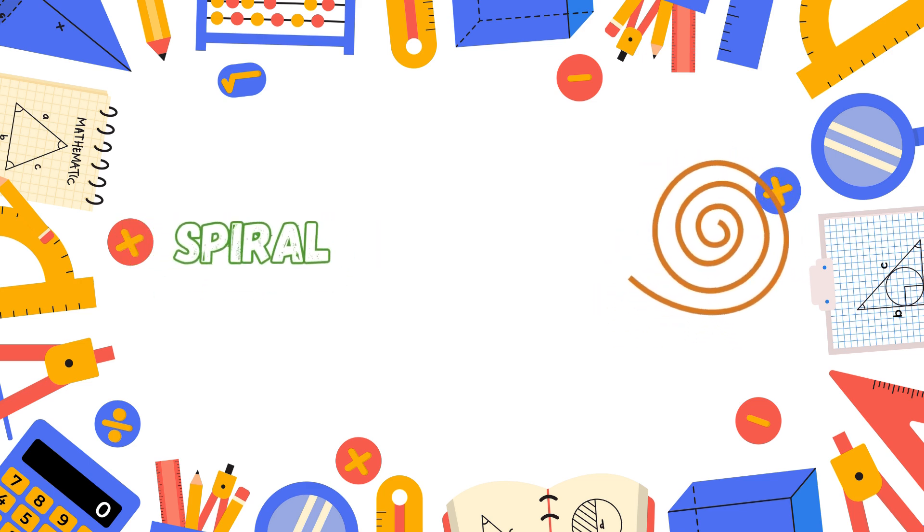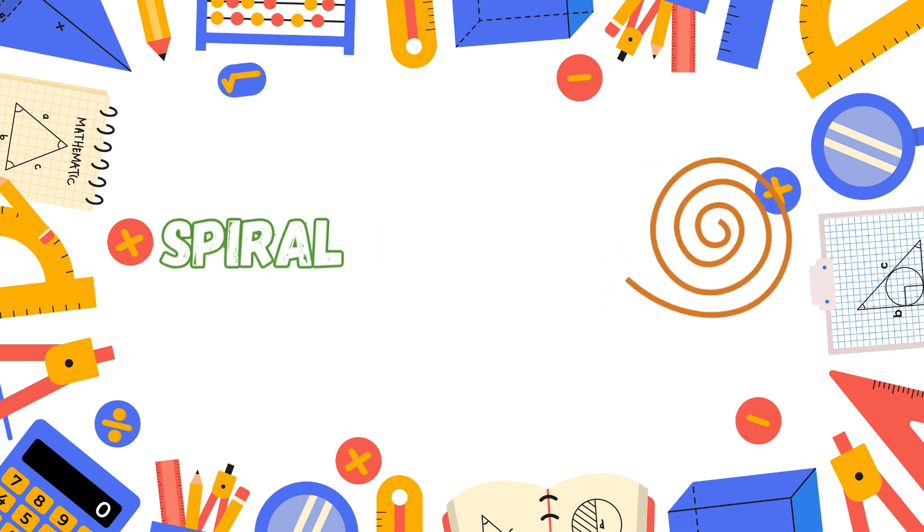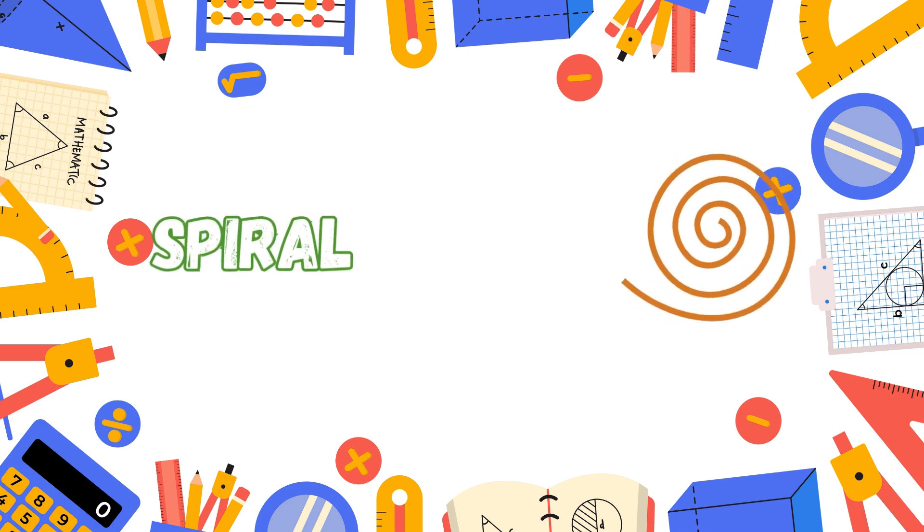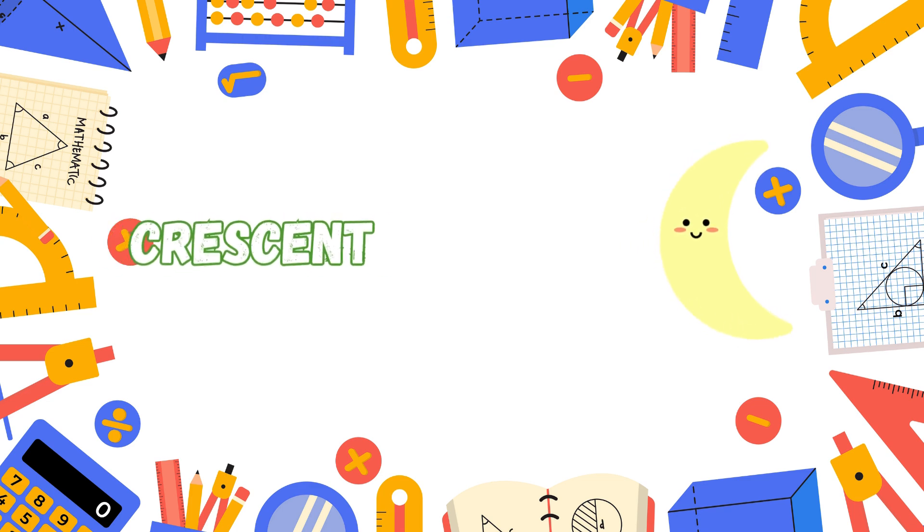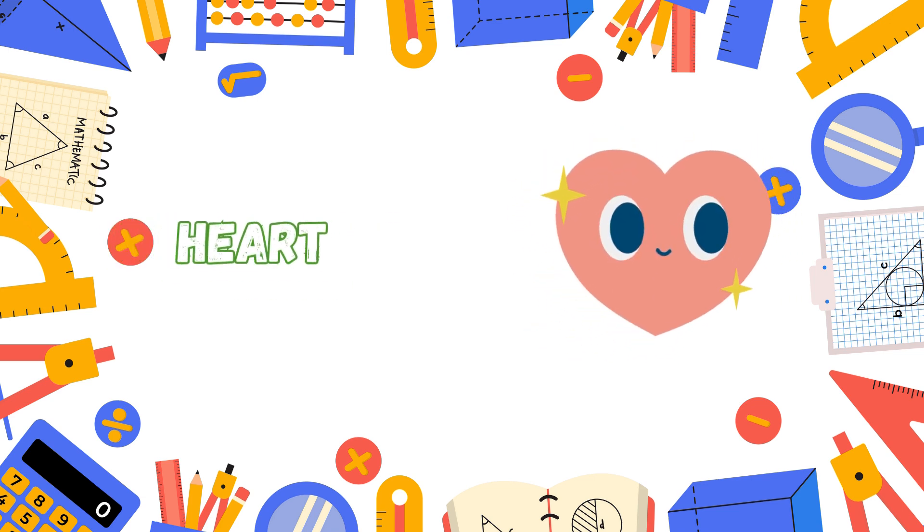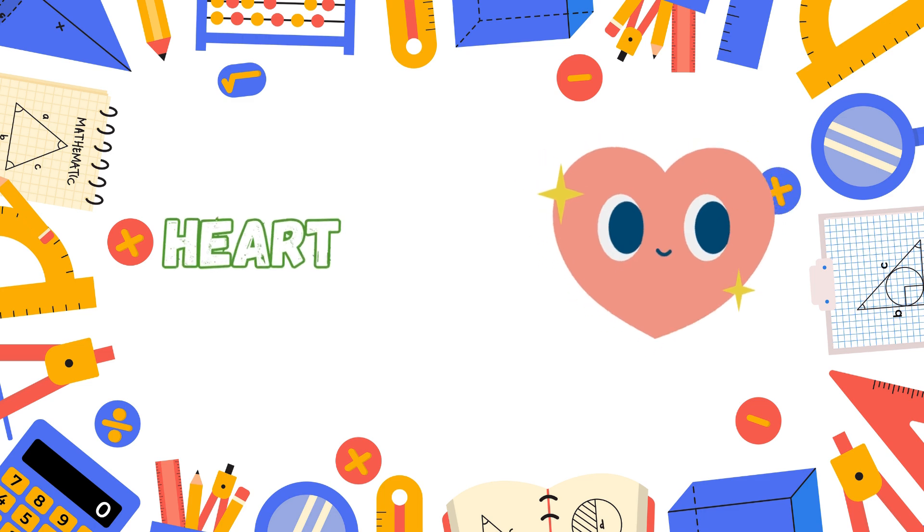Spiral spins like a snail's shell, round and round, a magic spell. Arrow points to the way we go. It shows us paths, high and low. Crescent curves like the moon at night, a glowing smile so soft and bright.